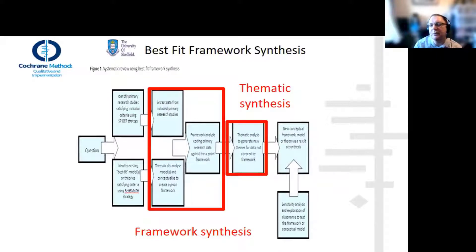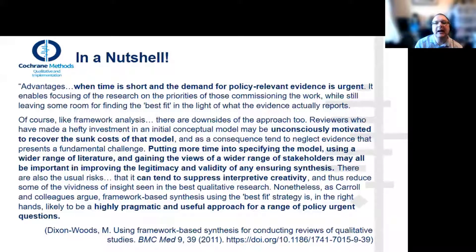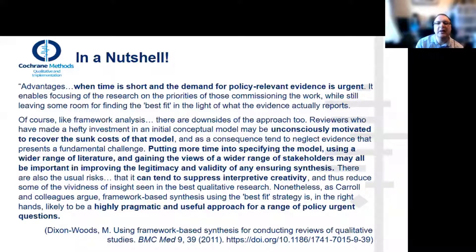The leftover data could be very thin or lacking in context, so you want to - put simply - critique your own framework rather than unleashing it on the world unevaluated. This is why the process involves double searching: you find the primary research studies for your topic, but you also find the best-fit frameworks or models for that topic. By reducing the requirement to find the perfect framework, this is believed by experts such as Mary Dixon Woods to speed up the process, making it particularly useful for areas of policy-related synthesis.